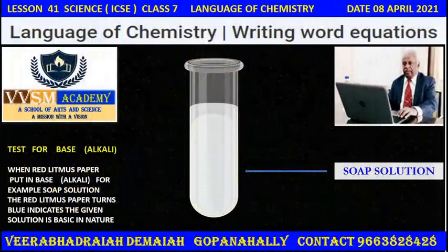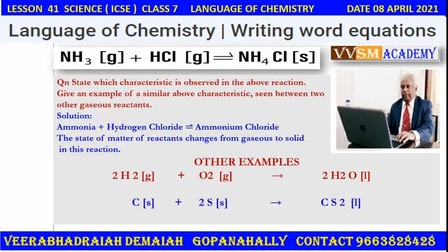Friends, state which characteristic is observed in the above reaction: ammonia plus hydrogen chloride gives ammonium chloride. The state of matter changes from gaseous to solid in this reaction. Similarly, the same type of reaction — gas plus gas gives liquid — is seen when two atoms of hydrogen combine with one atom of oxygen to give two molecules of water. Also, carbon plus two sulfur gives CS₂, carbon disulfide, which is a liquid.